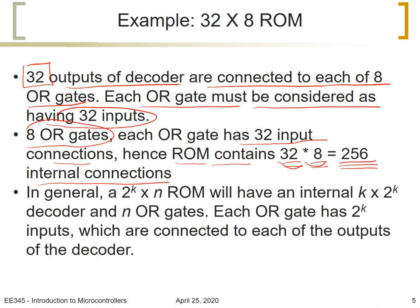In general, if a ROM has 2 to the K words and N bits per word, it will have an internal K multiplied by 2 to the K decoder and N OR gates. Each OR gate will have 2 to the K inputs, which are connected to each of the outputs of the decoder.